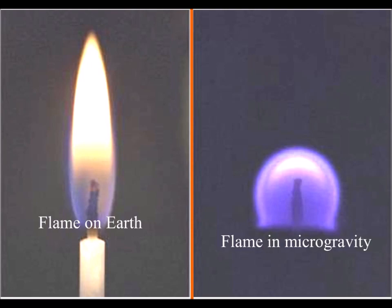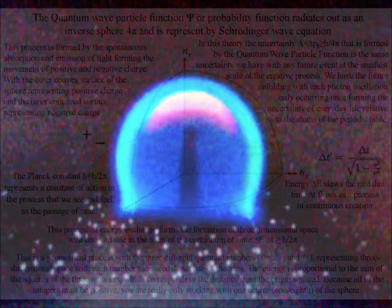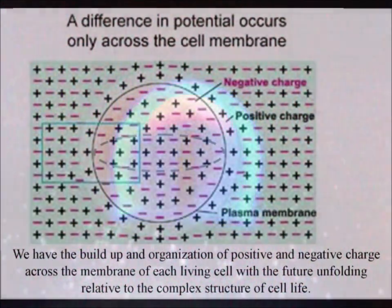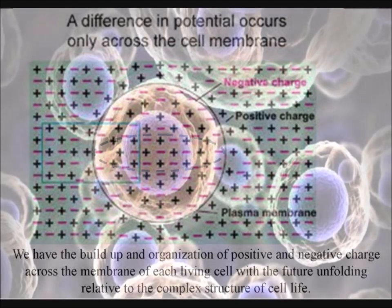This is an image from the International Space Station of a candle flame in zero gravity. We can see that it naturally forms a sphere, with the spherical surface interacting with the environment. This is very similar to a living cell. We have the build-up and organization of charge relative to the membrane of each living cell within us.